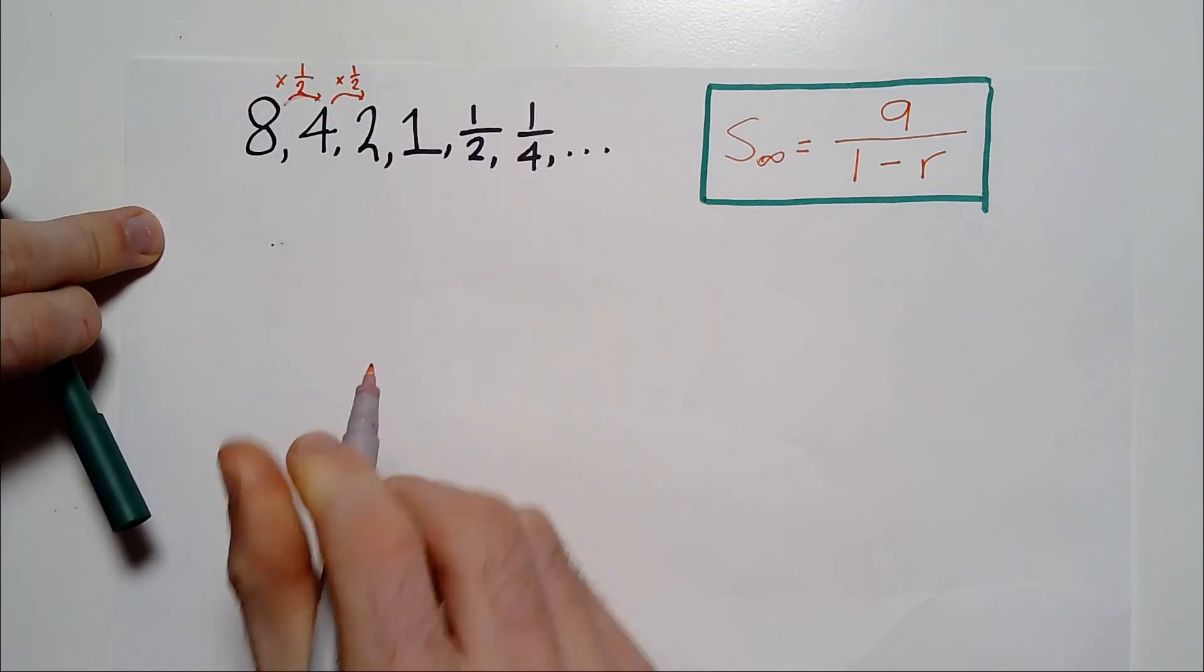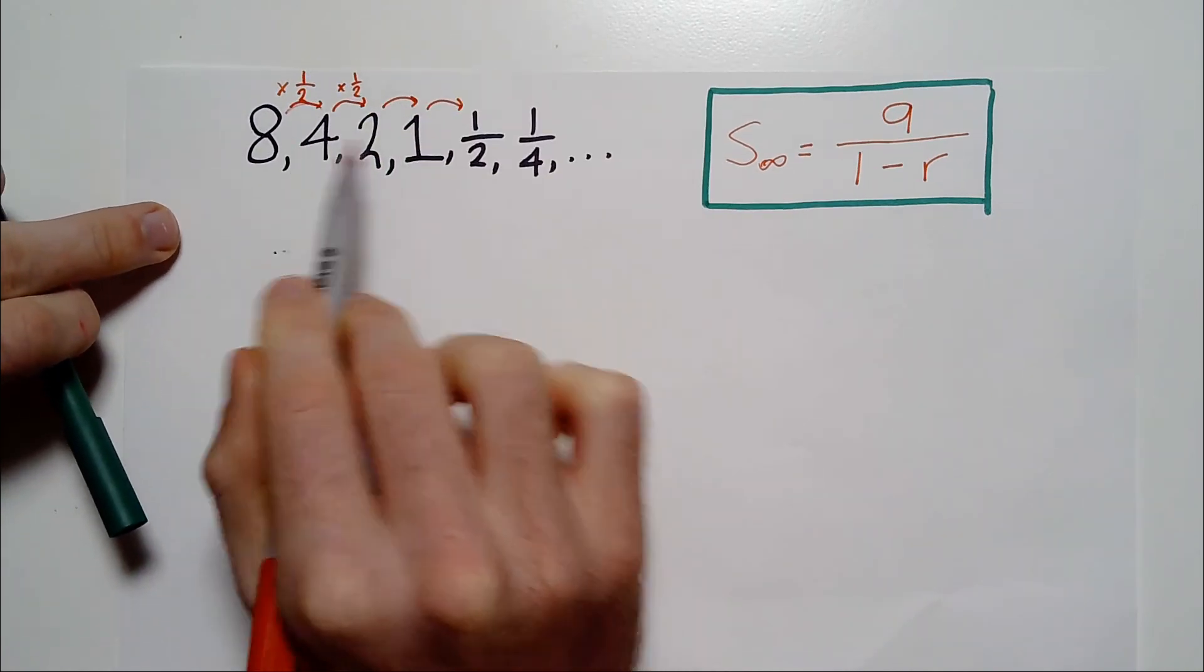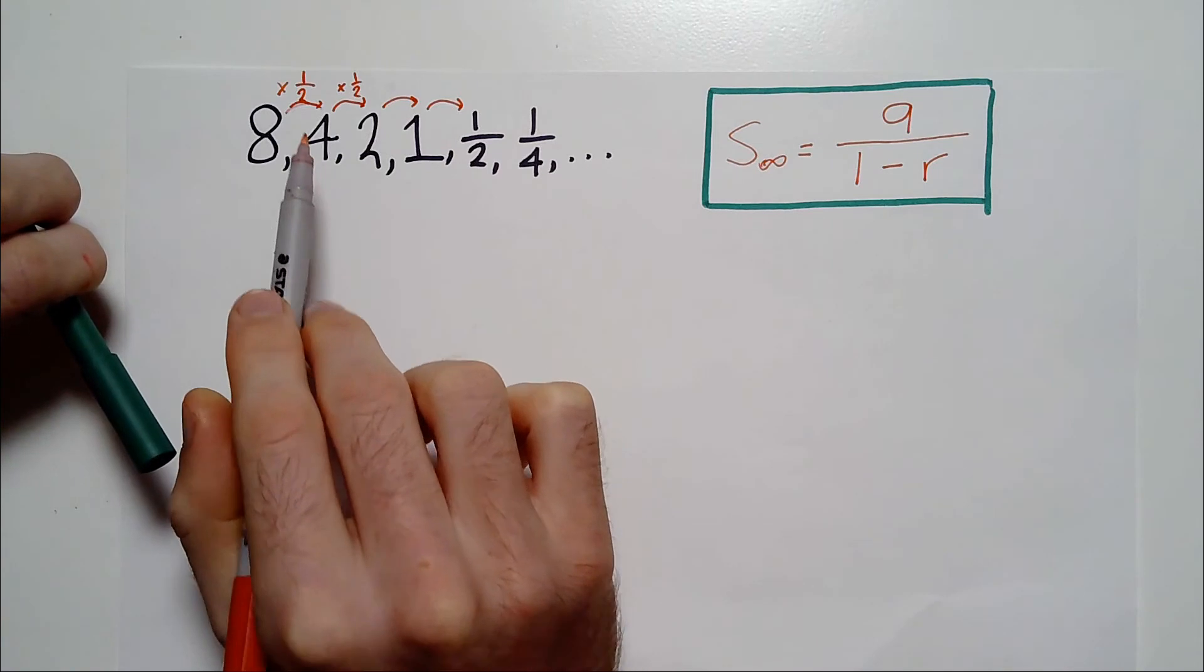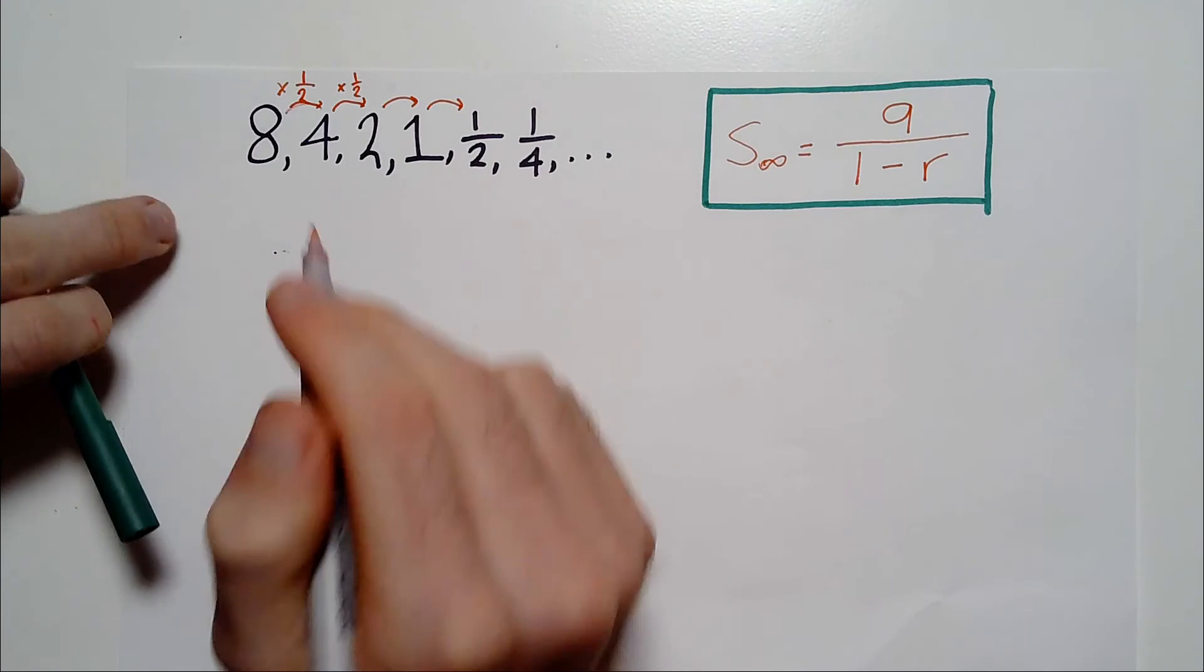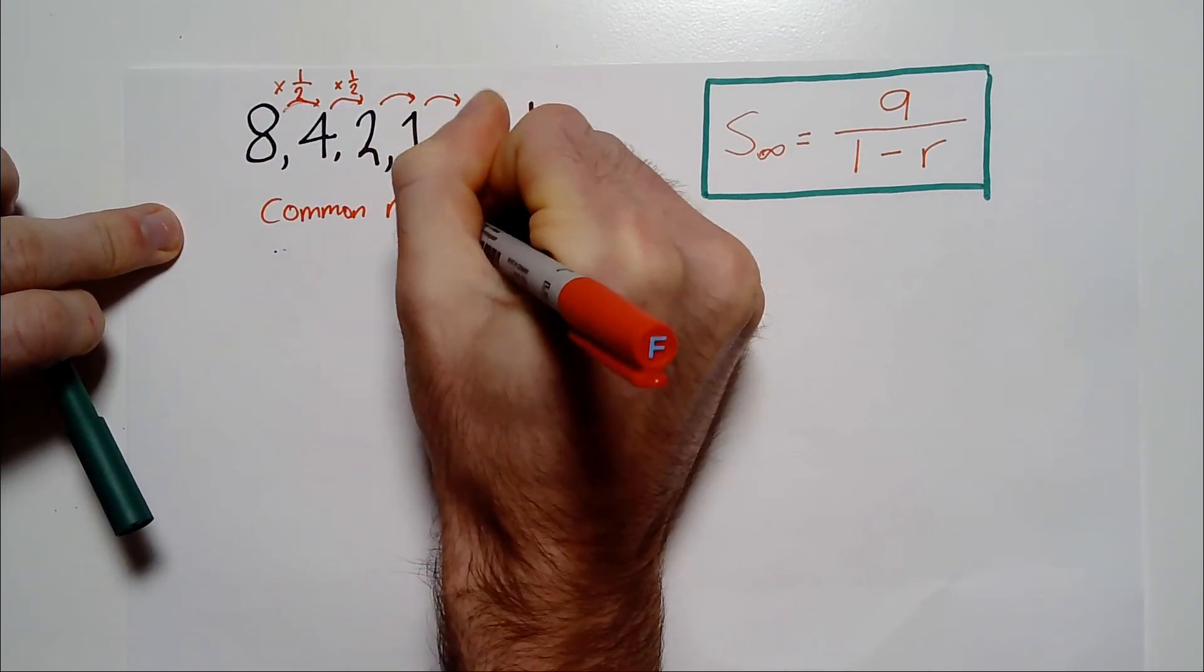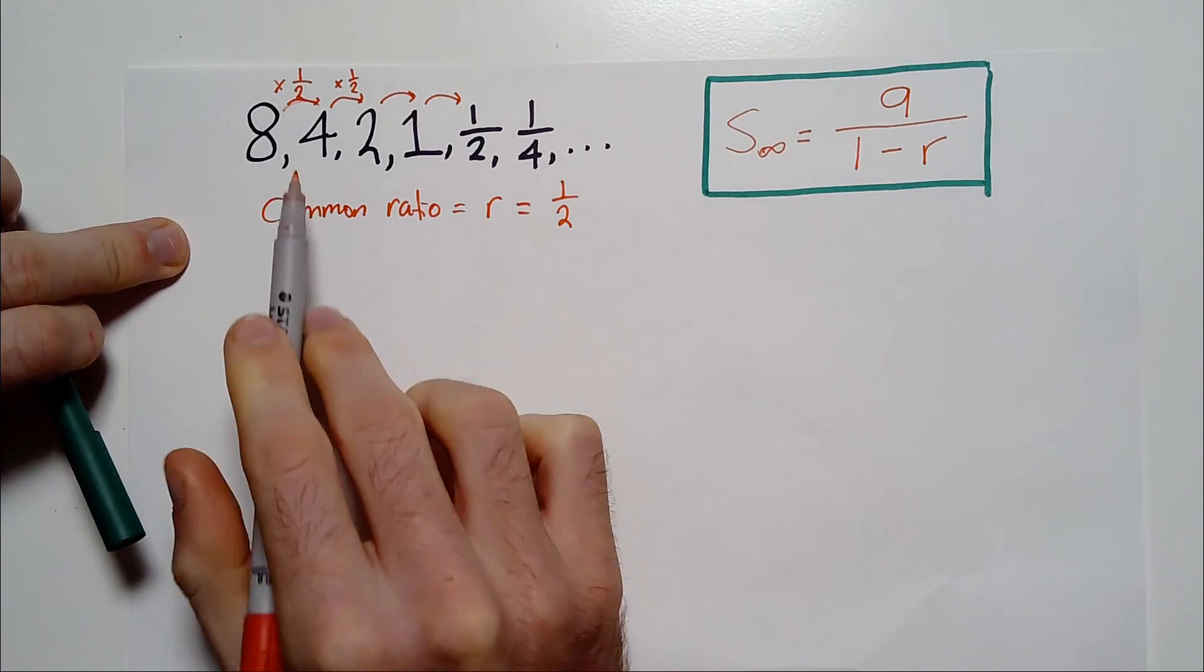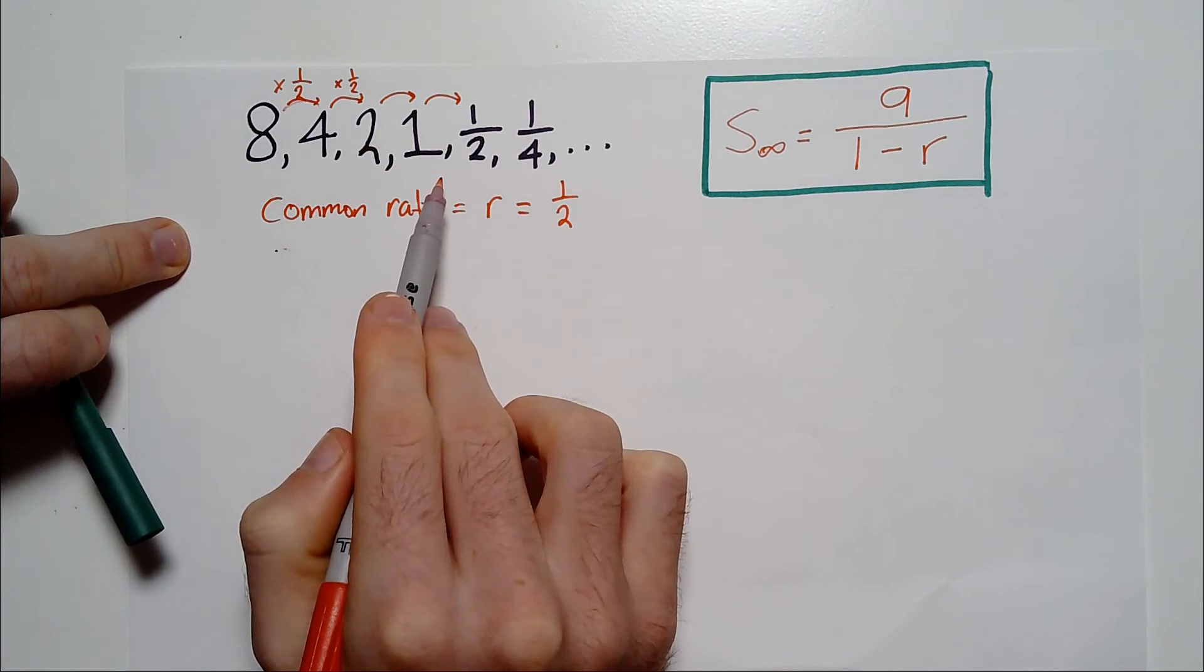So it is a situation where we have a pattern of numbers together, and to get from one number to the next, from left to right, we are multiplying by the same number each time. And in this case, it is the fraction one half. So we have what's called a common ratio, and that is represented by R.